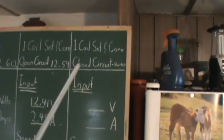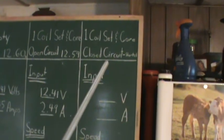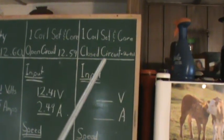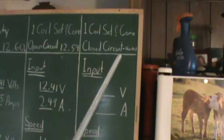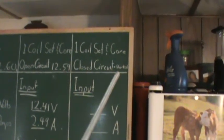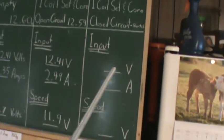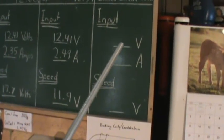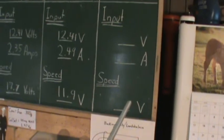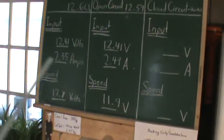So next test is going to be the one coil set and core. The one coil set on the U-core with the closed circuit or shorted right out. And we'll do the same thing. Let it settle. And record the voltage, amperage, and the speed. And then we'll discuss. There will be a lot to discuss now, I think.